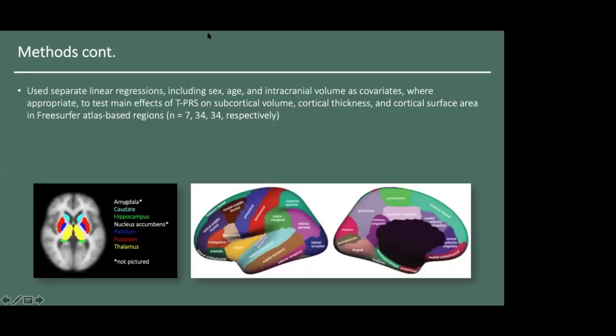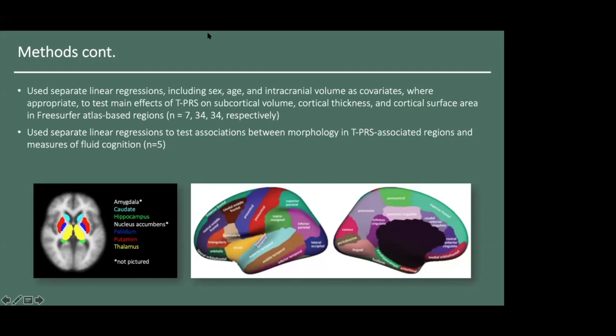More specifically, we used separate linear regressions to test main effects of TPRS on FreeSurfer-derived structural measures, namely volume in seven subcortical regions and thickness and surface area in 34 cortical regions. We included sex, age, and intracranial volume as covariates where appropriate. We also used separate linear regressions to test associations between volume, thickness, or surface area in TPRS-associated regions and each of the five measures of fluid cognition. In both primary and secondary analyses, we applied FDR correction to account for repeated testing.